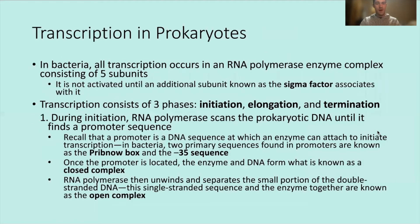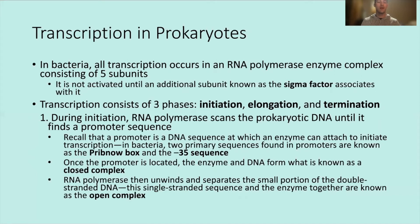Now let's talk about post-transcriptional control, starting with transcription in prokaryotes. In bacteria, all transcription occurs via a single RNA polymerase enzyme complex consisting of five subunits. An important additional subunit called the sigma factor must associate with the complex before it becomes active and can begin polymerizing. Transcription consists of three phases: initiation, elongation, and termination.